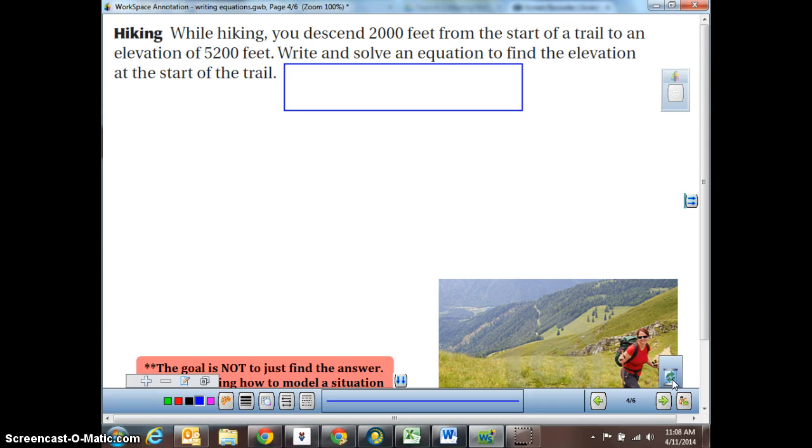All right, so again, we've got another one. We're going to work on this on our own. While hiking, you descend. Descend means to go down. So you go down 2,000 feet from the start of a trail to an elevation of 5,200 feet. Write and solve an equation to find the elevation at the start of the trail.